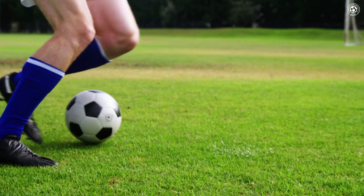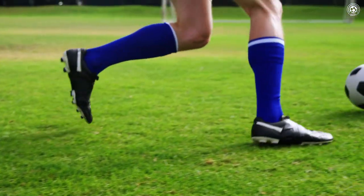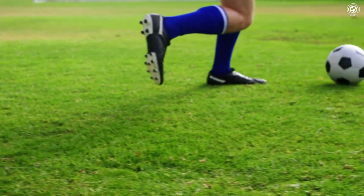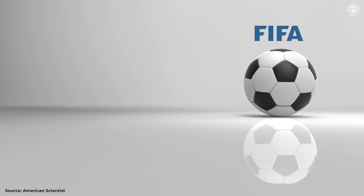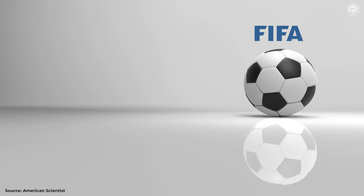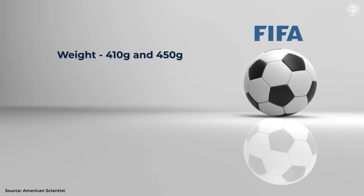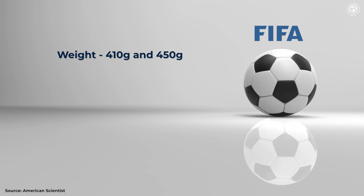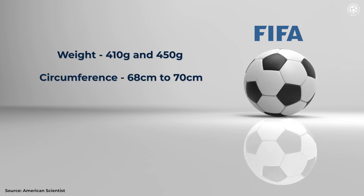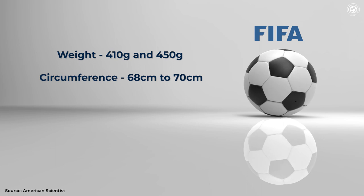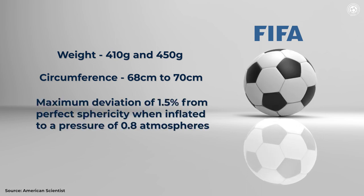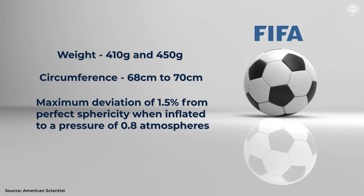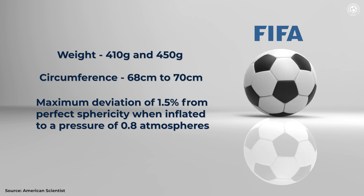As time passed, advancements in materials and construction techniques further improved, and the shape became more sophisticated. Today, for an official football to gain approval from FIFA, it must adhere to specific criteria. The ball must weigh between 410 and 450 grams, and it should be a sphere with a circumference ranging from 68 to 70 centimeters.